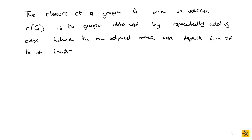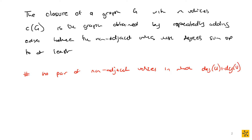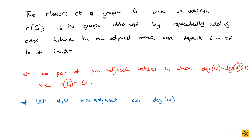In other words, you go through your graph and look at the non-adjacent vertices. If you have no pair of non-adjacent vertices where the degree of one plus the degree of the other is greater than or equal to n, then your graph is the closure. But if you find a pair of non-adjacent vertices u and v whose degrees add up to greater than or equal to n, then you add that edge, making your closure the original graph plus that edge.